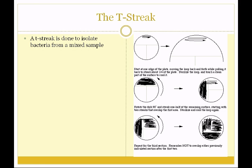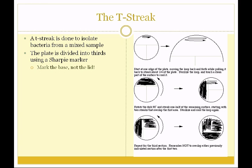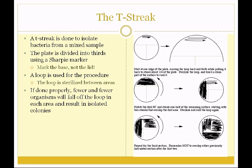The T-streak is done to isolate bacteria from a mixed sample. The procedure is shown on the right and I'll demonstrate this for you in lab. The plate is first divided into thirds using a Sharpie marker — mark the base, not the lid. A loop is then used for the procedure. The sample is acquired by dipping the loop into it, and then the loop is spread onto the first area. You'll then sterilize the loop and streak some of area one into area two. Sterilize your loop again and streak some of area two into area three. If done properly, fewer and fewer organisms will fall off the loop in each area and result in isolated colonies after incubation.